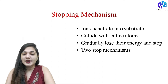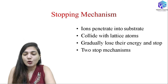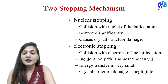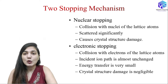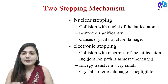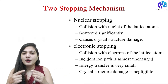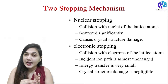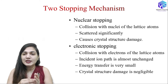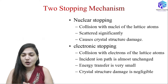There are two mechanisms depending on how the ions collide and with which particle they are colliding. If the ion is colliding with the nucleus, it is called nuclear stopping. If the ion is colliding with the electronic cloud, it is called electronic stopping. In an atom, the nucleus is at the center with electrons revolving around it, so an incoming ion can either hit the nucleus or hit the electronic cloud.